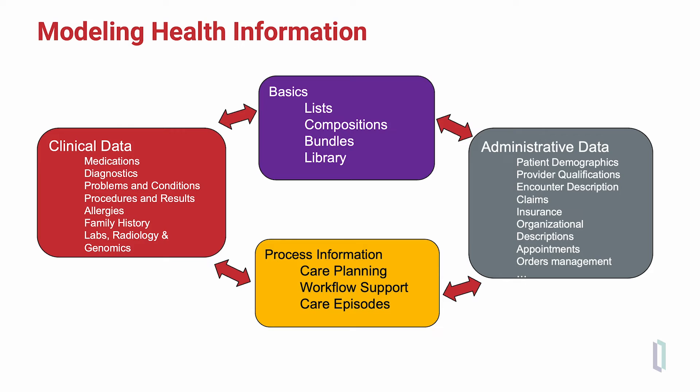To look at how FHIR resources are used to model healthcare information, there are several different categories of these resources. First, the basic resources that include the different methods to represent data for human consumption. These basics include the FHIR list resource, FHIR compositions or documents, FHIR bundles that group together a set of related FHIR resources, and the library resource that contains other FHIR artifacts.